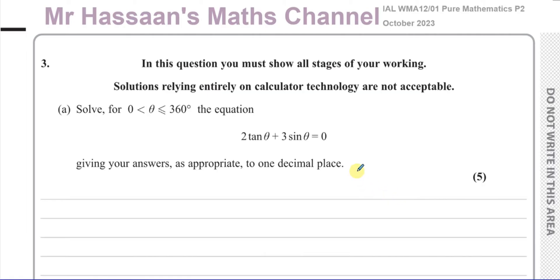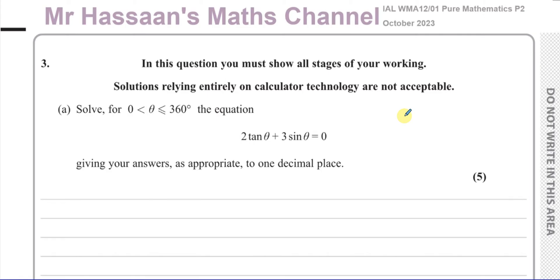When solving trig equations in P2, we normally have to rewrite the equation using trig identities in a way that allows us to solve it. There are two main identities we should know in P2 — these are the fundamental ones. In Cambridge they give you these in the formula sheet; in Edexcel they don't, so you should know them.